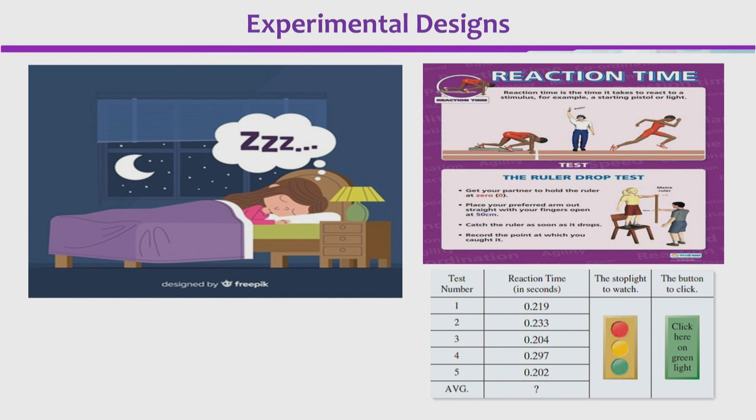Less sleep leads to a longer reaction time; more sleep leads to a shorter reaction time. Remember the example of the intervening variable: less sleep will make you tired, and when you are tired your physical reaction time can actually increase, meaning you take much longer to respond to things. When you are tired, you don't respond as quickly.